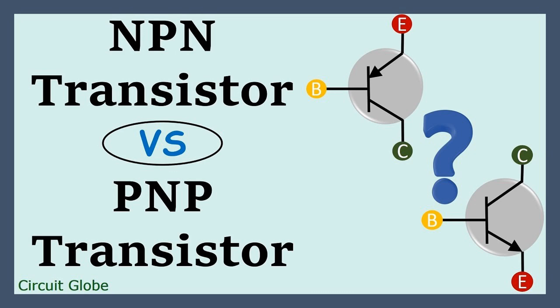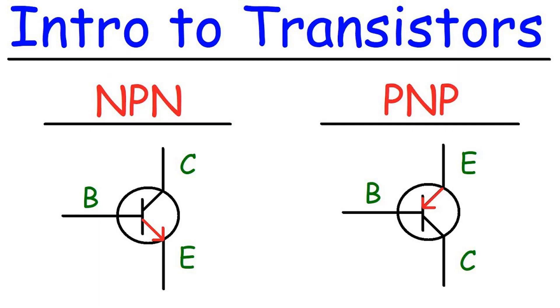Doping Type — NPN Transistor: In an NPN transistor, the semiconductor material is composed of three layers — a thin P-type layer sandwiched between two N-type layers. This means that the majority charge carriers in the NPN transistor are electrons, which are negative charge carriers.